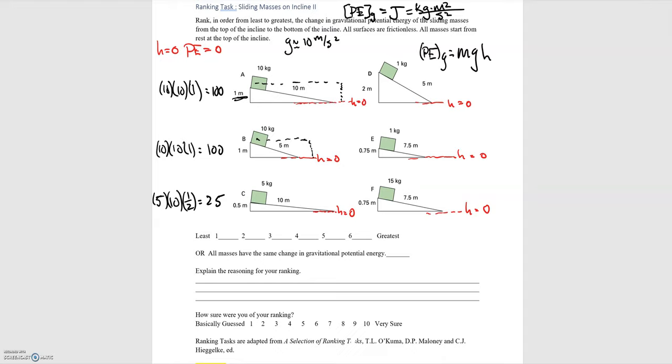Here we've got 1 kilogram times 10 times 2 for the height, and that's equal to 20.